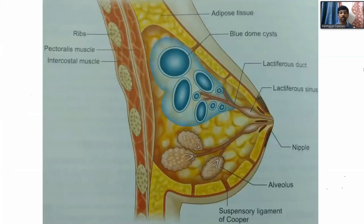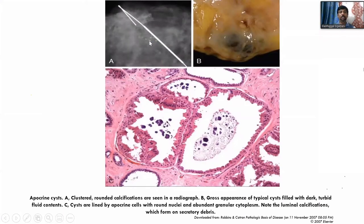The blue dome cyst shows multiple dilated cysts with inspissated material. Mammographically, fibrocystic disease can cause multiple microcalcifications. In the gross appearance you can see the bluish cystic lesions. Histologically, apocrine metaplasia is present and multiple dark areas represent calcification. These calcifications appear as multiple speckled calcifications on mammography.